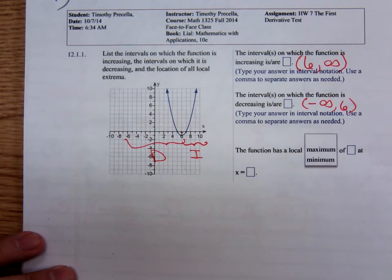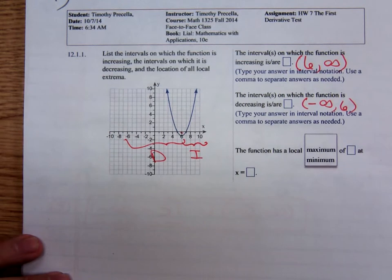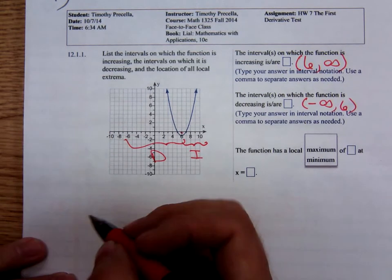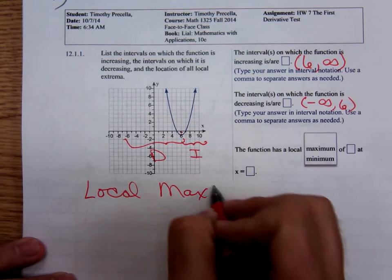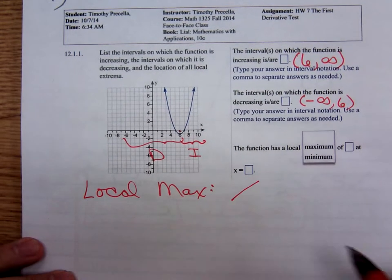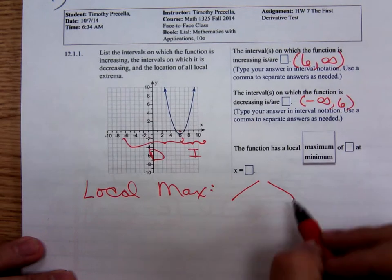Do we have a local maximum? A local maximum occurs when the function is increasing and then changes to decreasing.